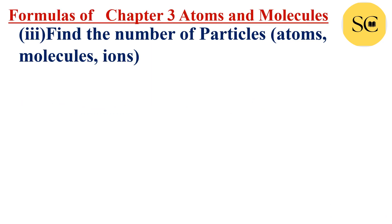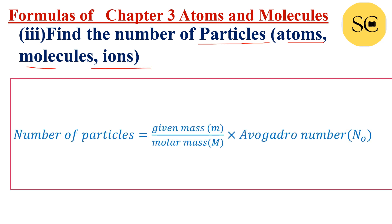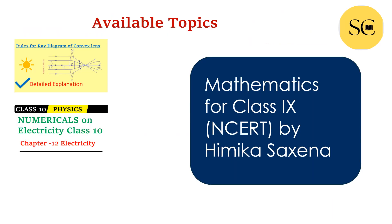Find the number of particles — meaning atoms, molecules, or ions. Number of particles is equal to given mass upon molar mass into Avogadro number: (m / M) × N₀. From this formula you can find the number of particles, whether they are atoms, molecules, or ions.